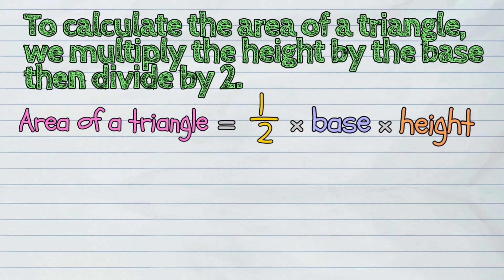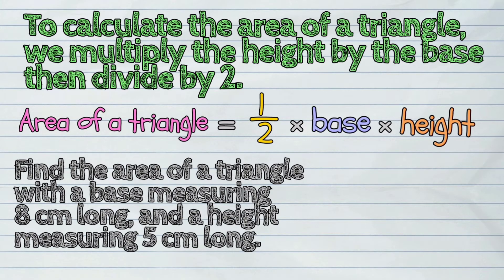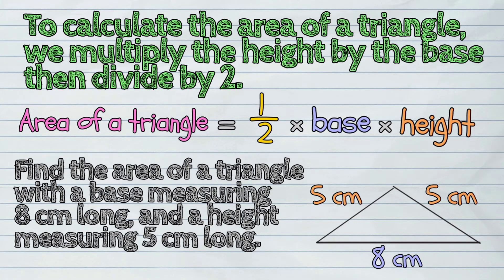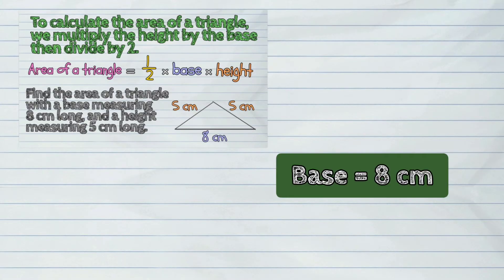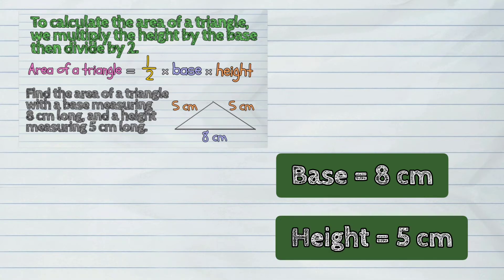Find the area of a triangle with a base measuring eight centimeters long and a height measuring five centimeters long. Our solution is: Base is equal to eight centimeters and height is equal to five centimeters.